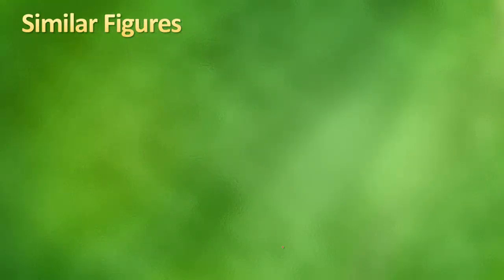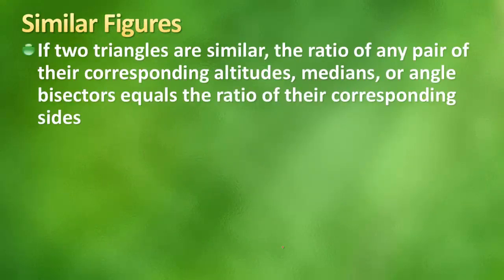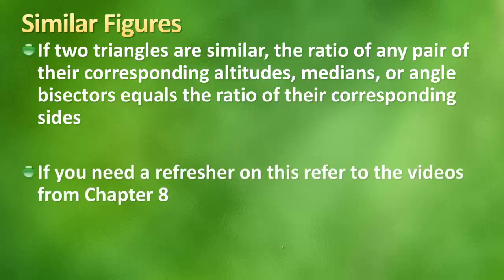Now let's compare the ratios of similar figures. If two triangles are similar, the ratio of any pair of their corresponding altitudes, medians, angle bisectors is the same as the ratio of their corresponding sides. It's identical, because they're all corresponding parts. So if you need a refresher on any of this, go back to the videos from Chapter 8 and just kind of breeze through them until you get what you need out of it.